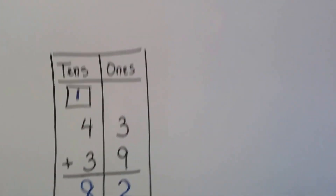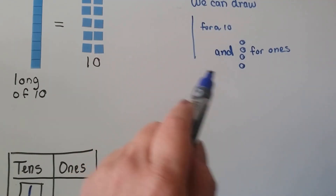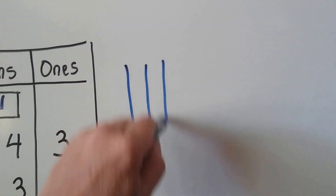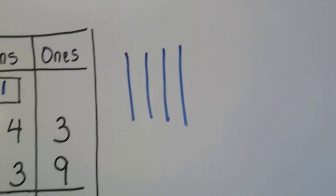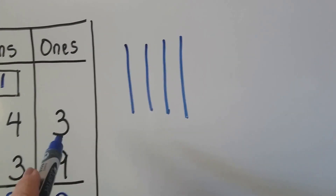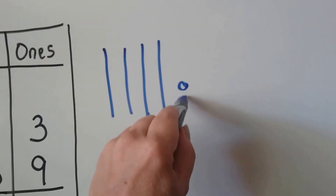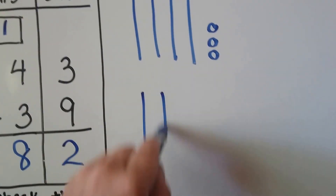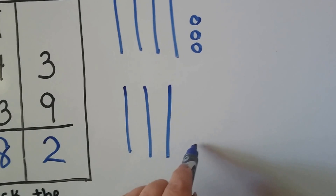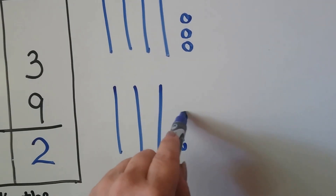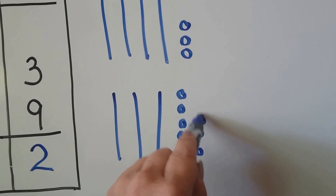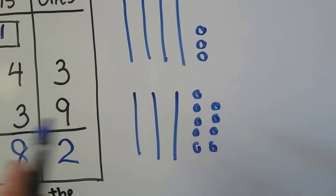We can model this by using the line for a 10 and the little circles for ones. 43 would be 1, 2, 3, 4 lines for 4 tens and 3 little circles. And the 39 would be 1, 2, 3 lines and 1, 2, 3, 4, 5, 6, 7, 8, 9 circles for 39.